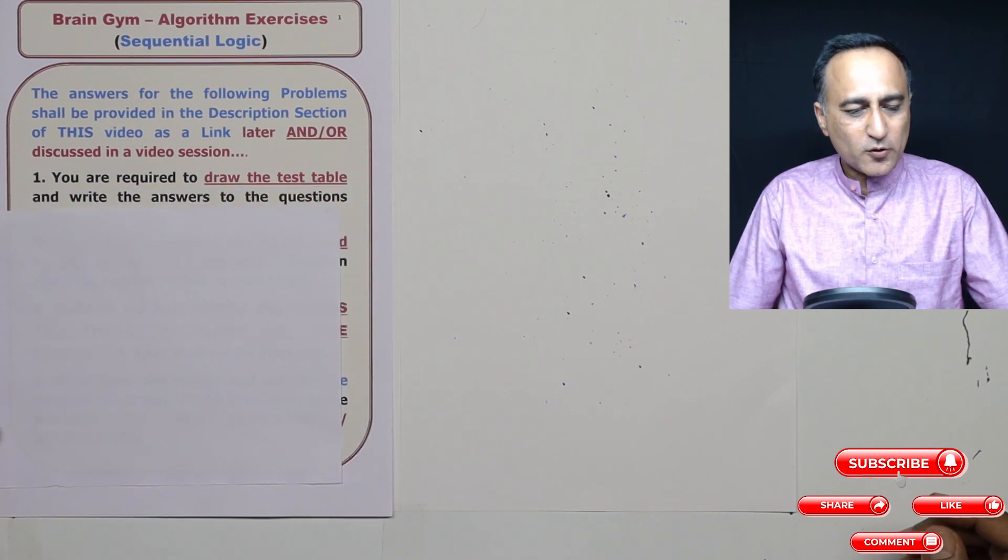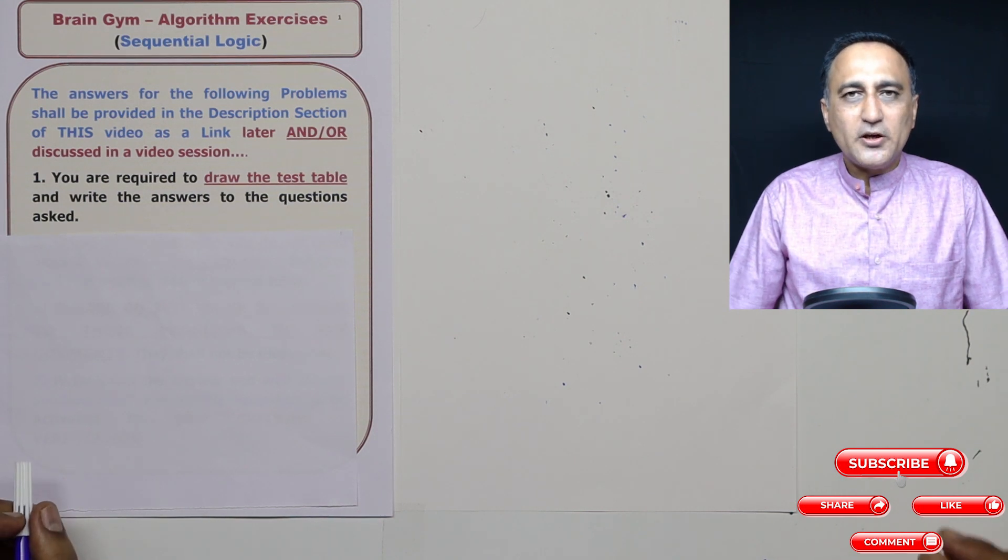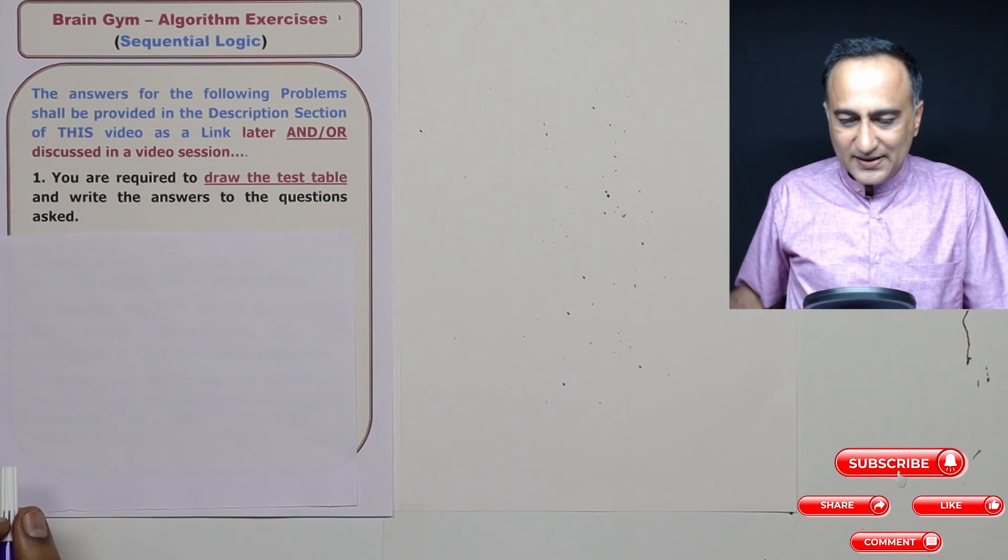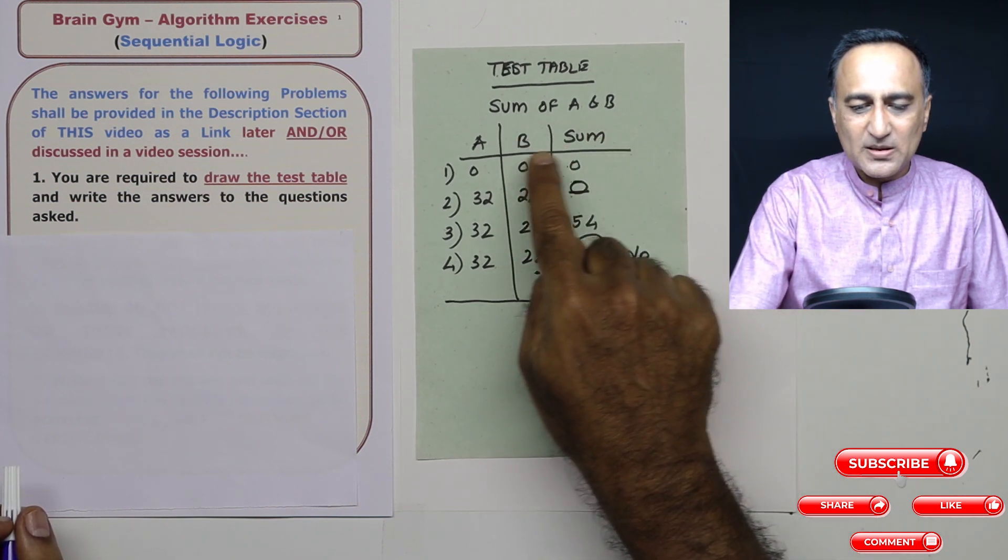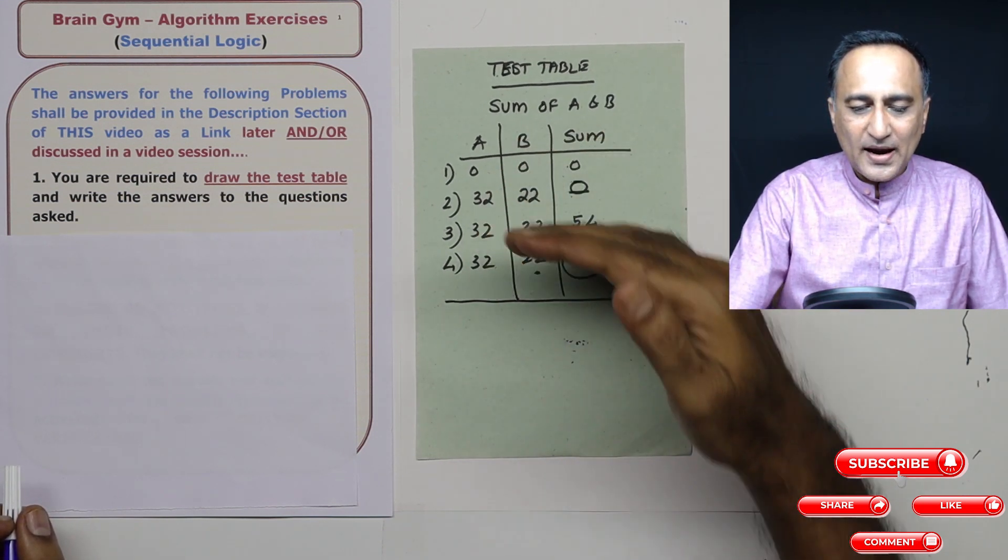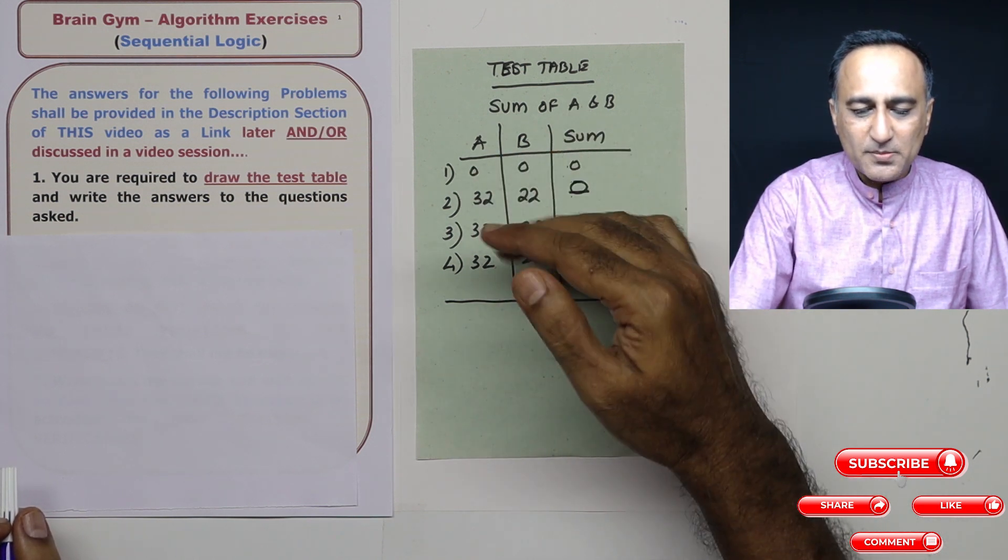The very first thing I would like to tell you is for each of the problems, you must draw a test table, something similar to this one for finding the sum of two numbers. And at each step, see what all the values of the variables change.